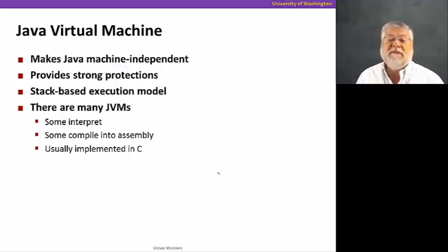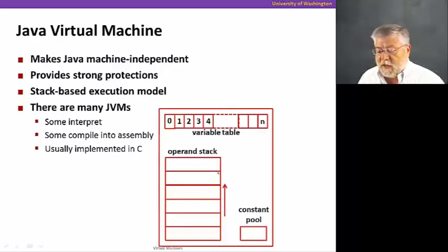Java uses a stack-based execution model. There are many different kinds of Java virtual machines. Some do more interpretation, some compile into assembly. They're usually implemented in a language like C.